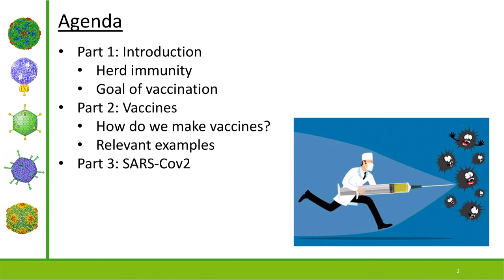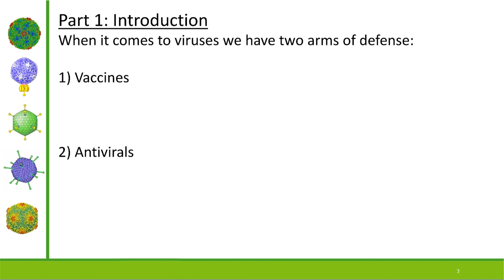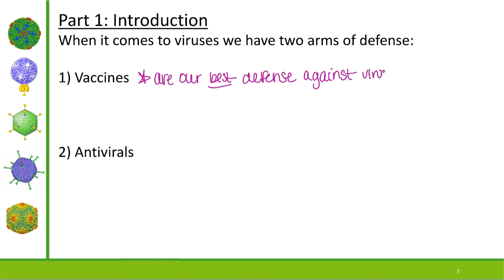Let's start with something we've already seen. When we started talking about antivirals, we said that when it comes to viruses, we have two arms of defense. We have antivirals, which was topic 18, and now in topic 19, we're going to talk about that second arm of defense: vaccination. Vaccines are actually our best defense when it comes to viruses.